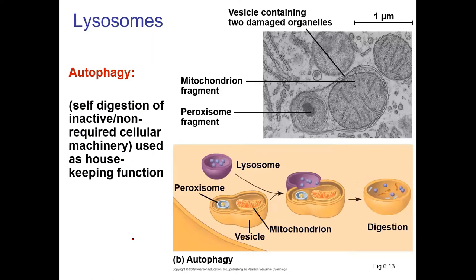The other process to mention is autophagy — 'auto' meaning self, 'phagy' meaning eating, so self-eating. Sometimes organelles get old and need to be broken down. Mitochondria in particular have enzymes, free radicals, and oxidative species that are dangerous. So rather than letting that loose when it breaks down, we digest the whole thing in a lysosome and recycle all those nutrients and parts.